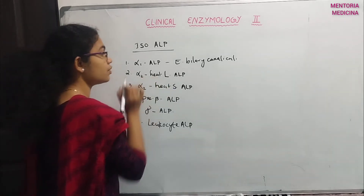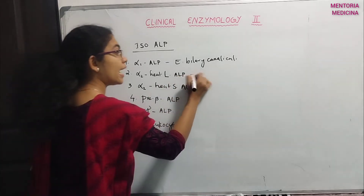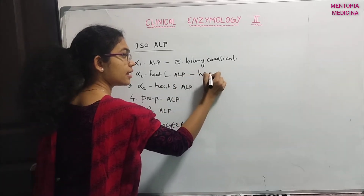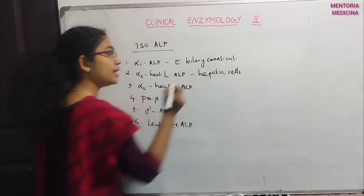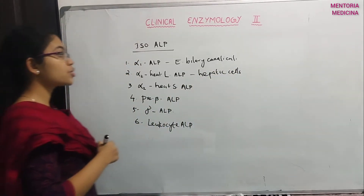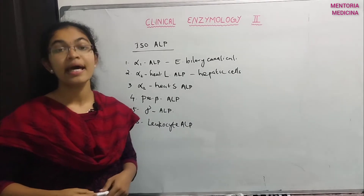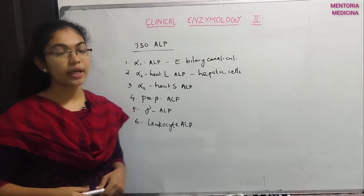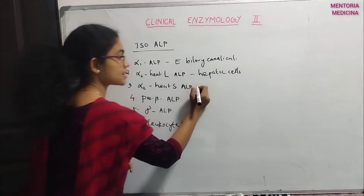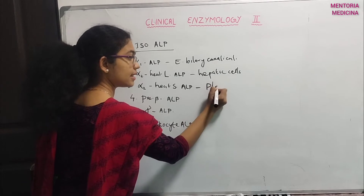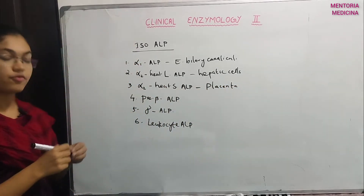Alpha-2 heat labile alkaline phosphatase is associated with hepatic cells. An increased level of alpha-2 heat labile alkaline phosphatase in hepatic cells indicates hepatitis. Alpha-2 heat stable alkaline phosphatase is called placental alkaline phosphatase.